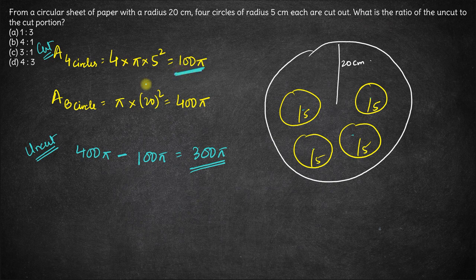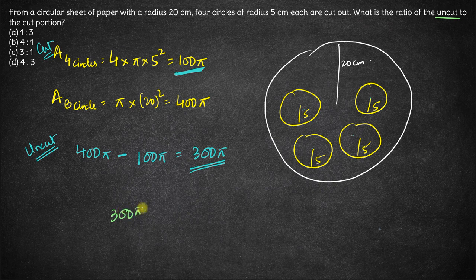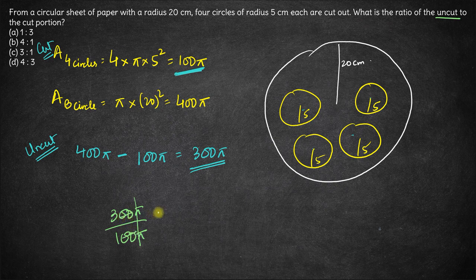So these are the areas of cut and the uncut portion. The required ratio is of the area of uncut to cut portion. So uncut portion is 300π and the cut portion is 100π. So the required ratio is—π cancels out, 100 cancels out—3 is to 1.